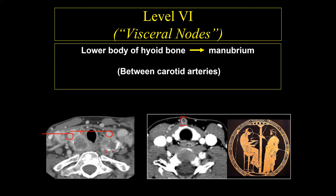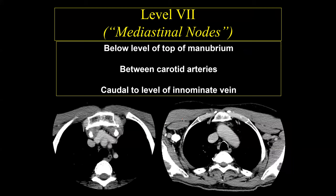Here is another example of a level 6 lymph node — the pretracheal or pre-laryngeal lymph node, lovingly called the Delphian lymph node in honor of the Oracle of Delphi. Apparently, people came to the Oracle from miles away, and the Oracle could always determine whether or not someone could live by palpating their anterior neck. Hence, this lymph node is referred to as the Delphian lymph node.